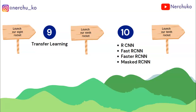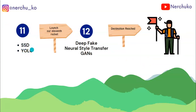When we use CNN, we use object detection. There are many types of object detection: RCNN, Fast RCNN, Faster RCNN, and Masked RCNN. We also use object detection algorithms using convolutional neural networks. Let's look at SSD and YOLO. SSD is a Single Shot Detector algorithm and YOLO is You Only Look Once. Once you have SSD and YOLO, you can do object detection.